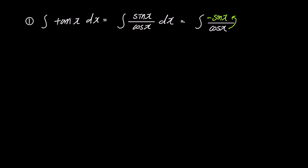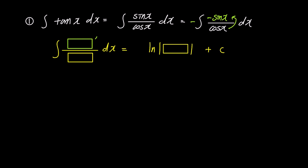However, since we introduced a minus sign that wasn't originally there, we multiply the entire expression by another minus sign outside the integral symbol. Bringing back the third formula, multiplying by the added minus sign, we put -sin x in the green box prime. Finally, put cos x in the yellow box of the denominator, and the answer is -ln|cos x| + c.